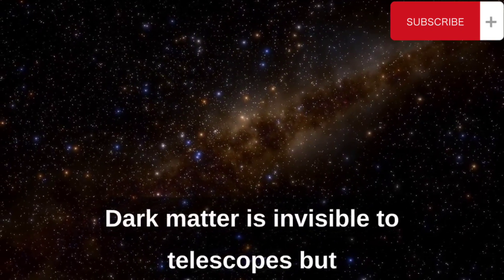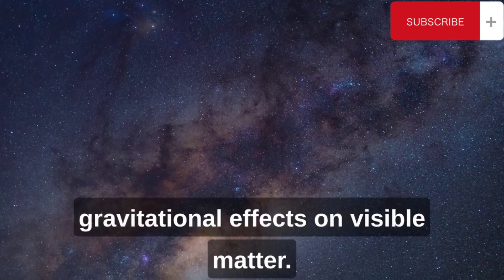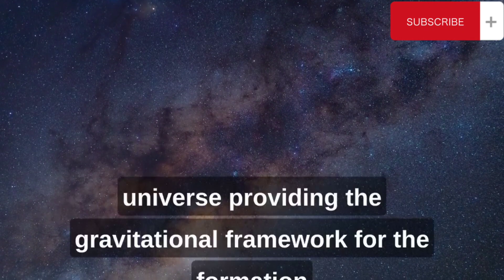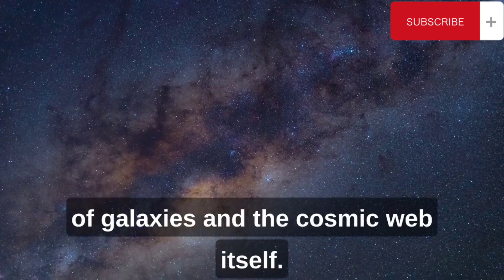Dark matter is invisible to telescopes, but its presence can be detected through its gravitational effects on visible matter. It acts as an invisible scaffold for the universe, providing the gravitational framework for the formation of galaxies and the cosmic web itself.